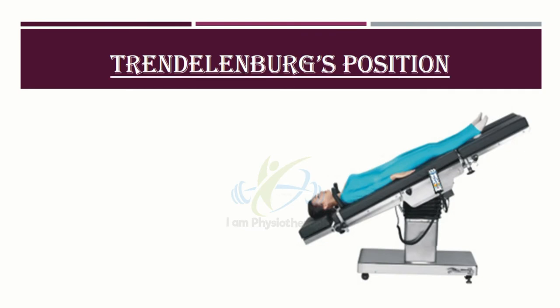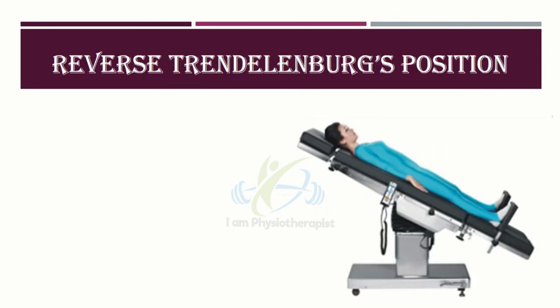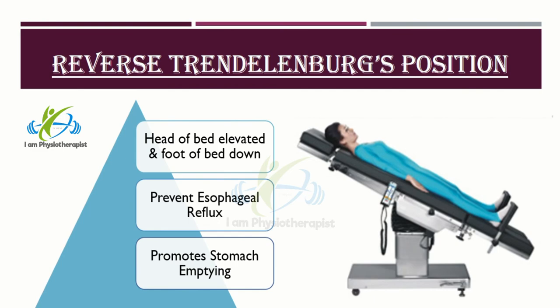Trendelenburg's position involves lowering the head of the bed and raising the foot of the bed. The patient's arms should be tucked at their sides. Hypertensive patients can benefit from this position because it promotes venous return. Trendelenburg's position is also used to provide postural drainage of the basal lung lobes. Reverse Trendelenburg's is the opposite, where the head of the bed is elevated with the foot of the bed down, and is often used for patients with gastrointestinal problems as it helps minimize esophageal reflux.